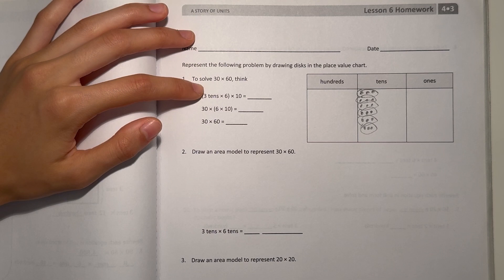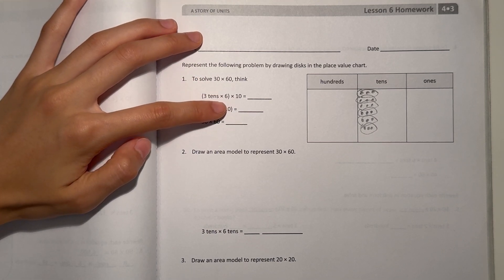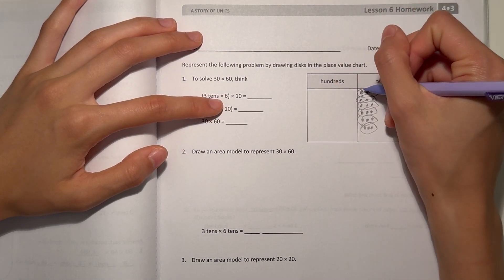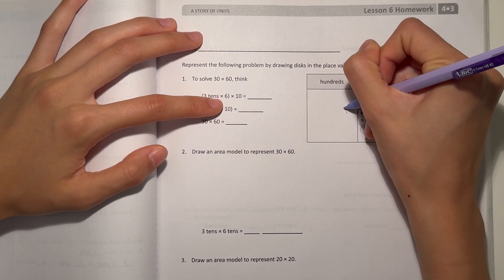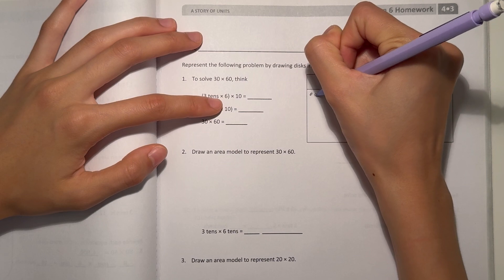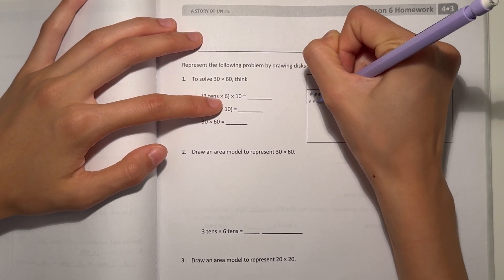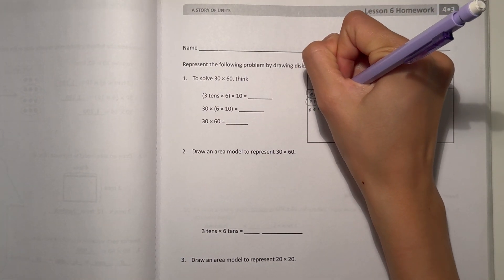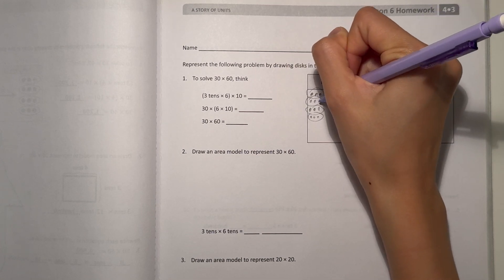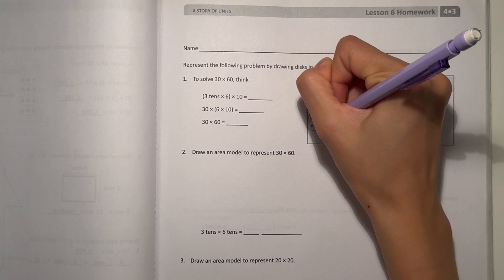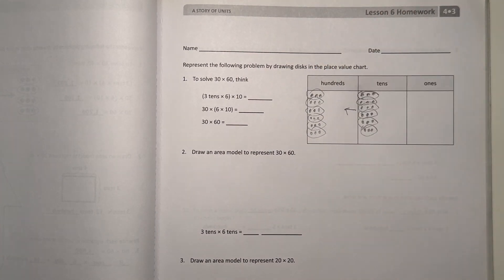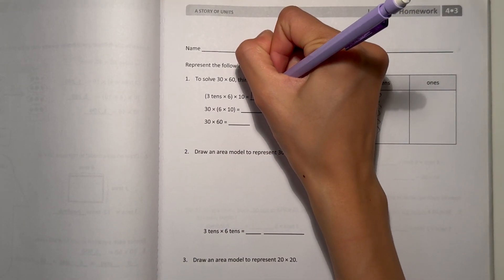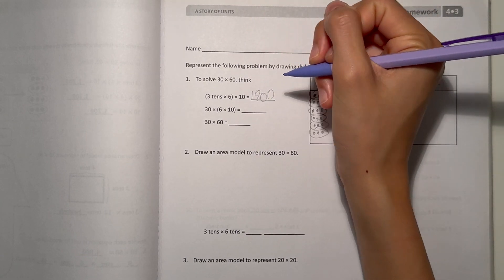But then we're not done yet. Now at the end, this is times 10. So if we're multiplying by 10, we're just moving everything one place value to the left. So we take all this and move it to the hundreds place. So now we have 6 groups of threes. And if we do that, now we have 18 hundreds, which is written as 18 with two zeros at the end, so 1,800.